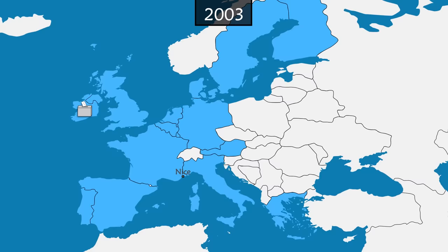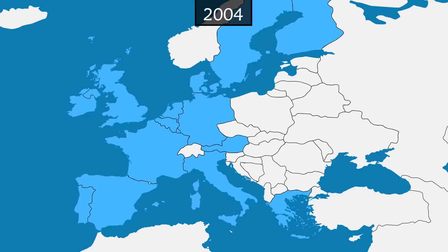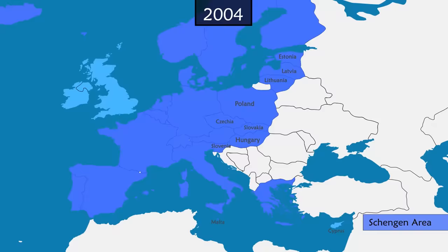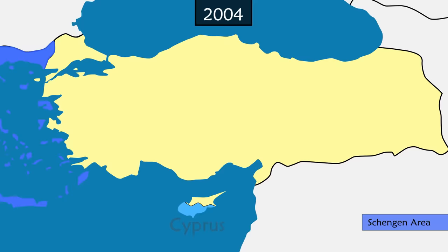On 1 May 2004, 10 new countries are included in the European Union. All new members join the Schengen area, with the exception of Cyprus, as part of the island is controlled by the Turkish army since 1974. After the half-failure of the Treaty of Nice, the 25 heads of state meet in Rome to again try to streamline the functioning of the European Union.